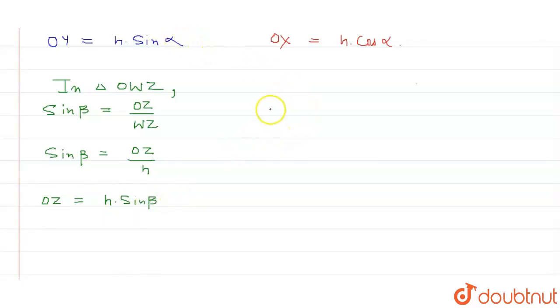Now in the same triangle, cos beta is equal to OW by WZ. And we know that WZ is equal to h. And we can write it as OW is equal to h multiply cos beta.